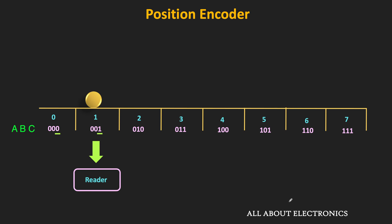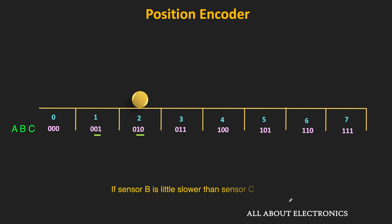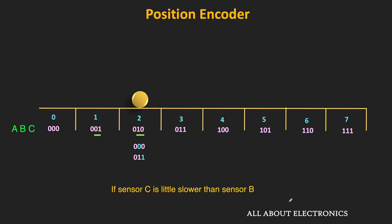Now consider the case where the object moves from zone 1 to zone 2. In that case, the outputs of sensors B and C change at the same time. Since all sensors are not identical, it is possible that one sensor reacts a little later than the other. If sensor B reacts later than sensor C, then momentarily the output becomes 000, and the reader may interpret this as the object moving from zone 1 to zone 0. If sensor C is slower than B, the output momentarily becomes 011, and the reader interprets it as the object moving from zone 1 to zone 3. This glitch during transition leads to a position error.